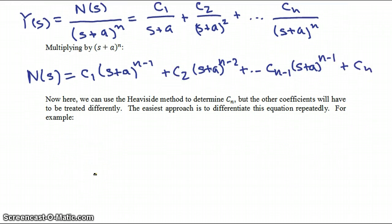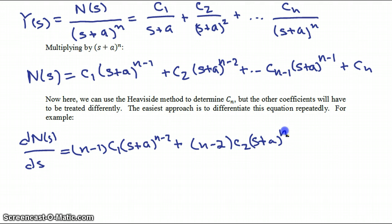So for example, if we take the first derivative with respect to s, then dN/ds is equal to n minus 1 times c1 times s plus a to the n minus 2, plus n minus 2 times c2 times s plus a to the n minus 3, plus 2 cn minus 2, s plus a, plus cn minus 1.